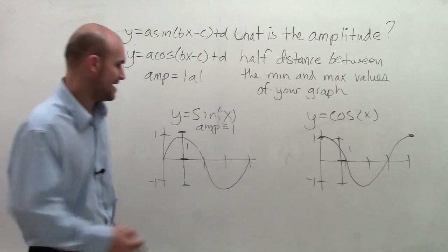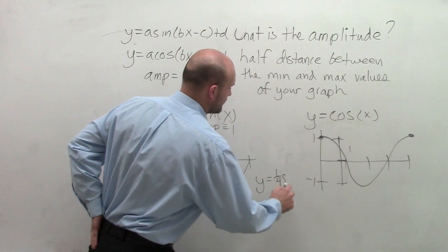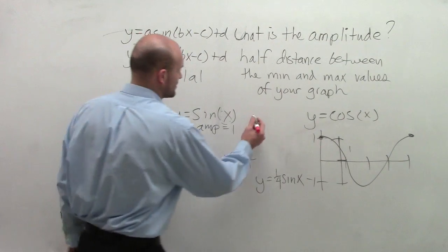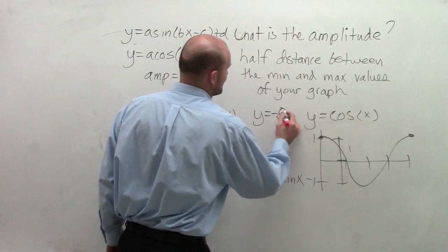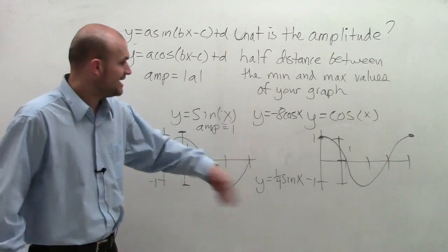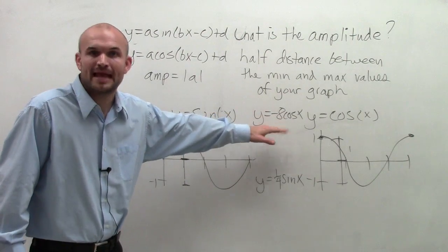So remember, it's going to be the absolute value of a. So if I give you a function like y equals one fourth sine of x, that means our amplitude is one fourth. If I say y equals negative 8 cosine of x, the absolute value of negative 8 is going to produce 8. So therefore, the amplitude of this function would be 8.